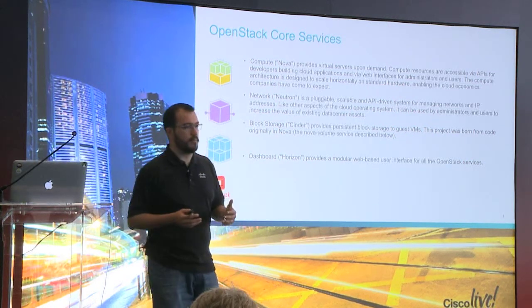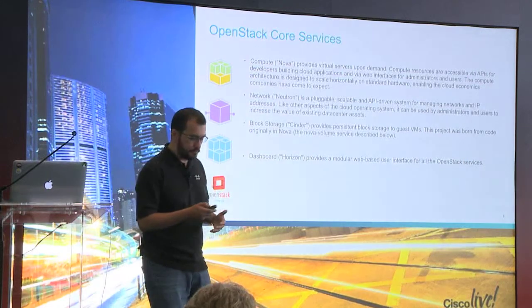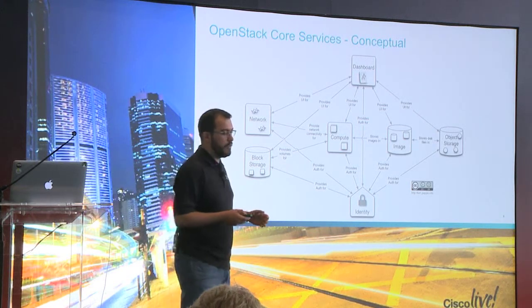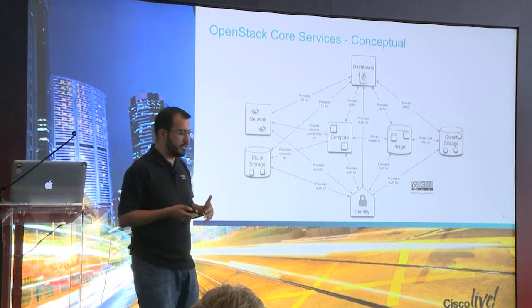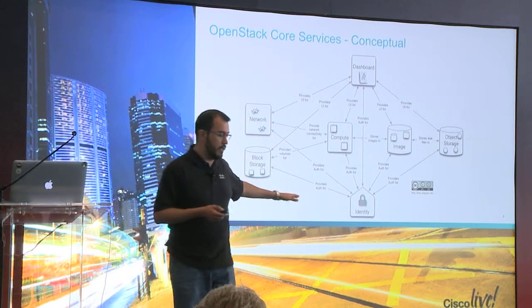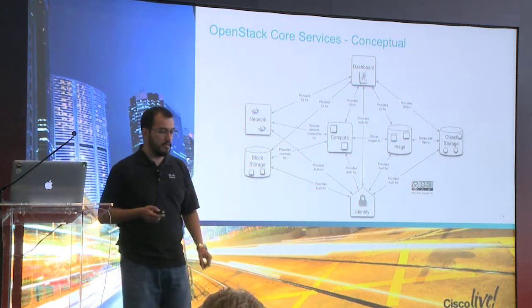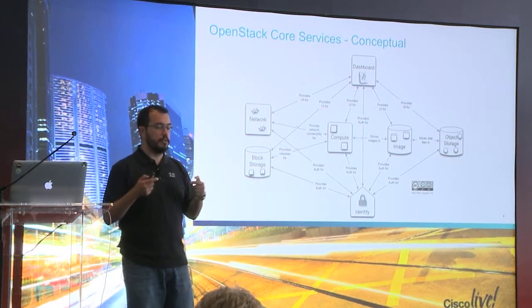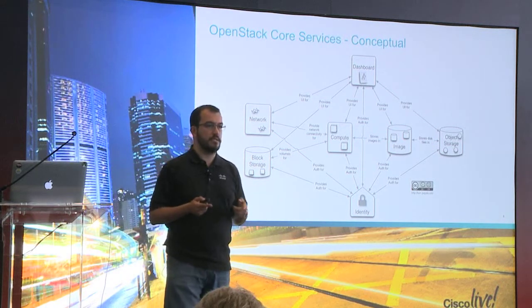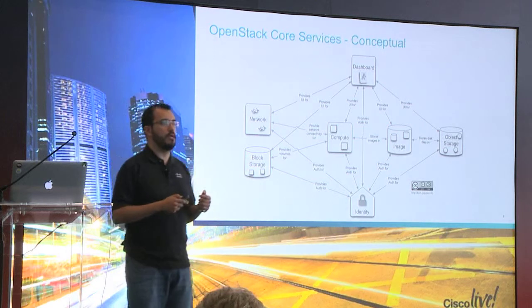All those APIs are accessible through the UI called Horizon and also via CLI. Conceptually it's very clean. At the top, the dashboard is a way to invoke or call all the APIs. At the bottom, there's a very important component called the identity service, whose project name is Keystone. All the arrows are pointing to identity because all the APIs are authenticated through the identity project. Not just users — the services themselves, when they interact with each other, also talk to the identity service.